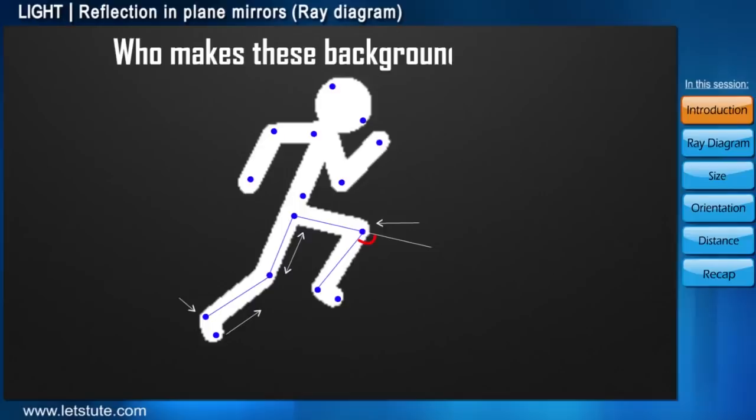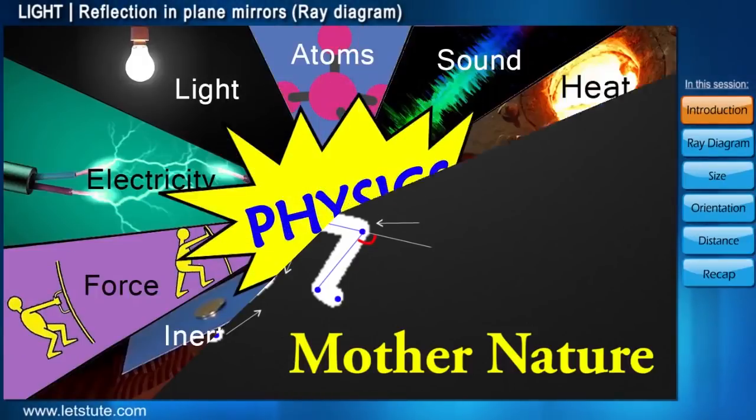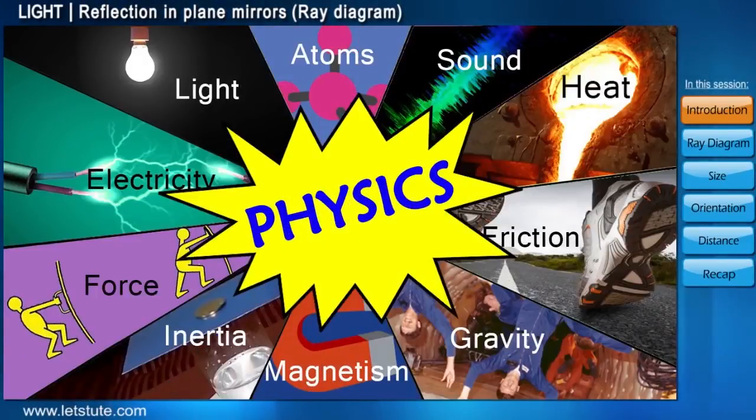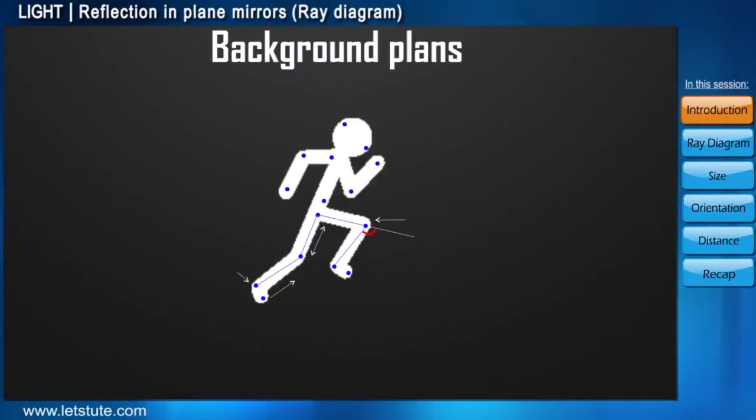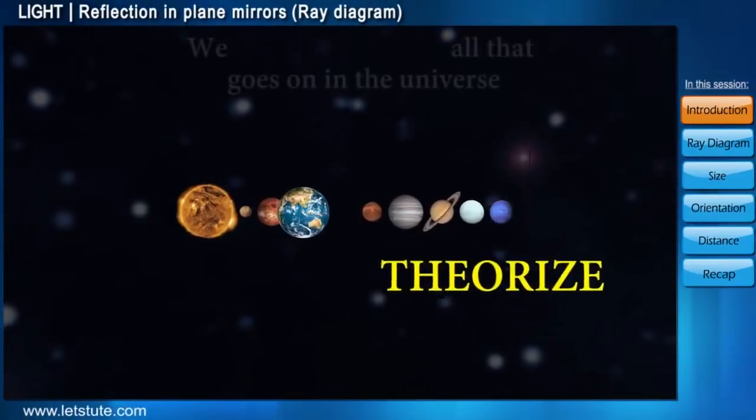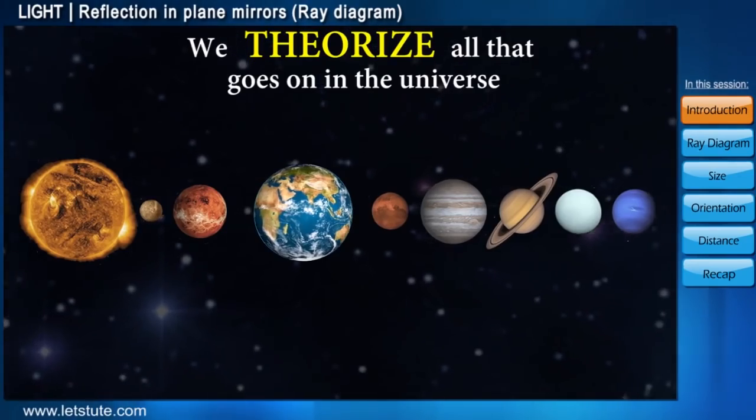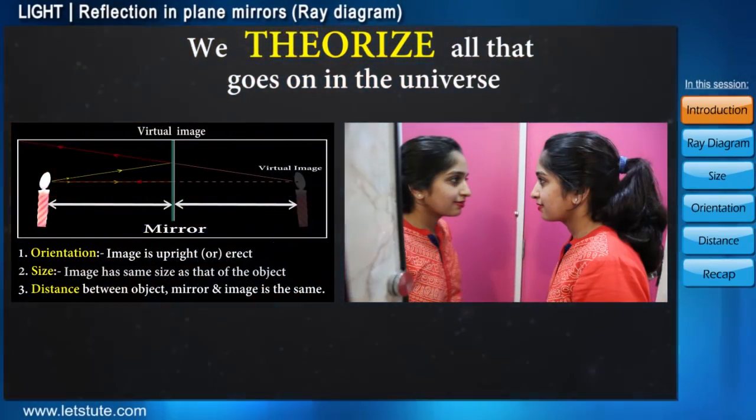So who makes these background plans? Mother Nature, of course. And why do we track and study them? Because that is what we do in this subject. After all, physics is the study of nature. These plans are tracked with the help of assumptions or theories. So we theorize all that goes on in the universe. This is again what we'll do to explain how images are formed in plane mirrors.